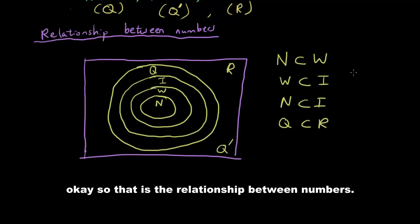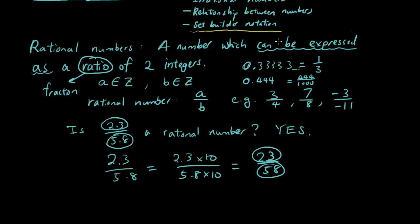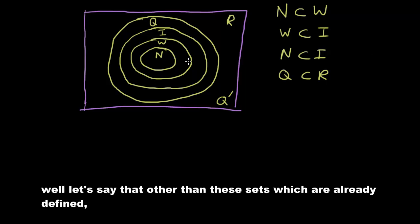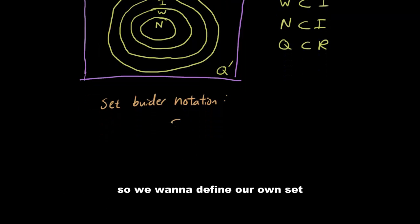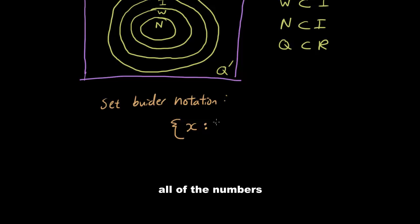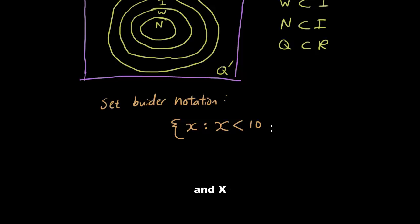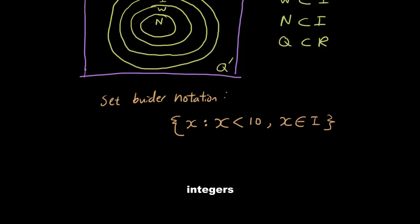The last concept today is set builder notation. Other than these common sets which are already defined, we can define our own set — for example, a set called X. We define X as the set of all x such that x is less than 10 and x is an element of integers.